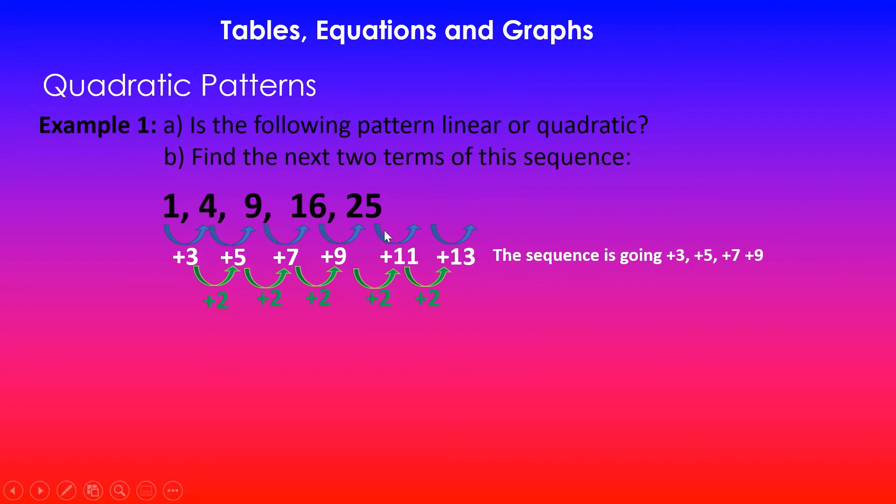If I'm adding 11 to 25, I'll get the next pattern, and then from 11 plus 2, I will get 13 because the second difference is constant, and that will give me the next term. The second difference here is always plus 2, and using this I can find the next two terms. 25 plus 11 will give you the next term, and then 11 plus 2 is 13. That answer plus 13 will give you the next term of the sequence.